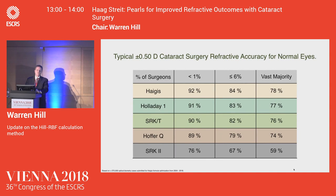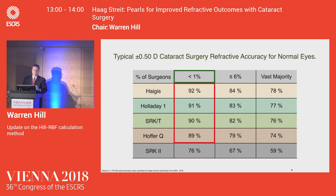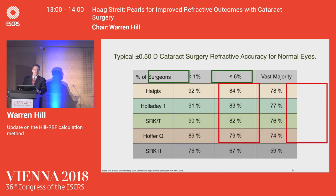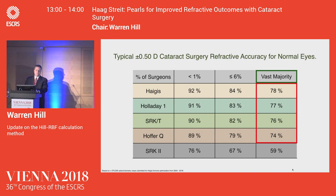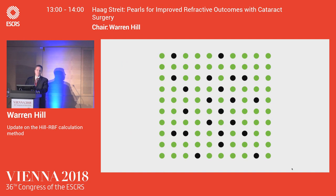This is just part of the Haggis formula optimization database with over 270,000 implantations. What we found over the years is less than 1% of physicians were at 92% accuracy for half a diopter. About 6% of surgeons are at 84%, and the vast majority are around 78%. Because this number comes up over and over, it tells us that it's a limitation of technology.